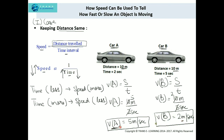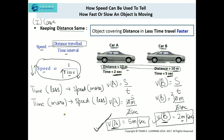Analyzing the speed of car A and car B, we conclude that car A travels faster than car B, because it covers 5 meters per second whereas car B covers only 2 meters per second. The distance is the same, but car A takes less time to cover 10 meters while car B takes more time. So when the time interval is less the speed is more, and when the time interval is more the speed is less. Objects covering distance in less time travel faster when distance is kept the same.